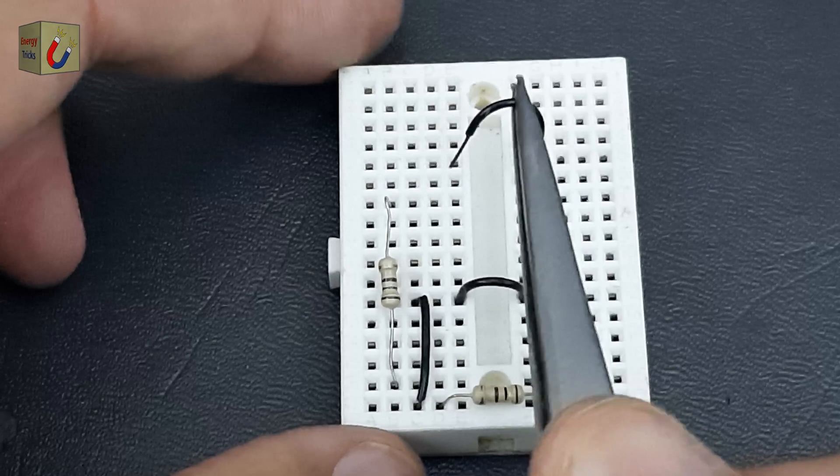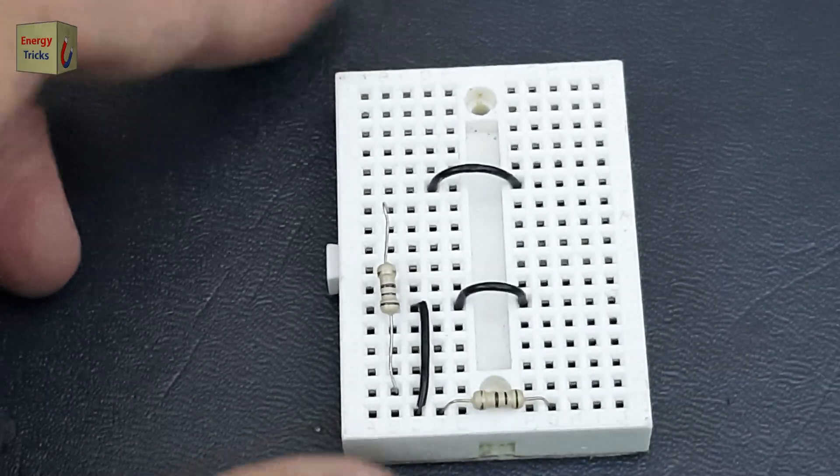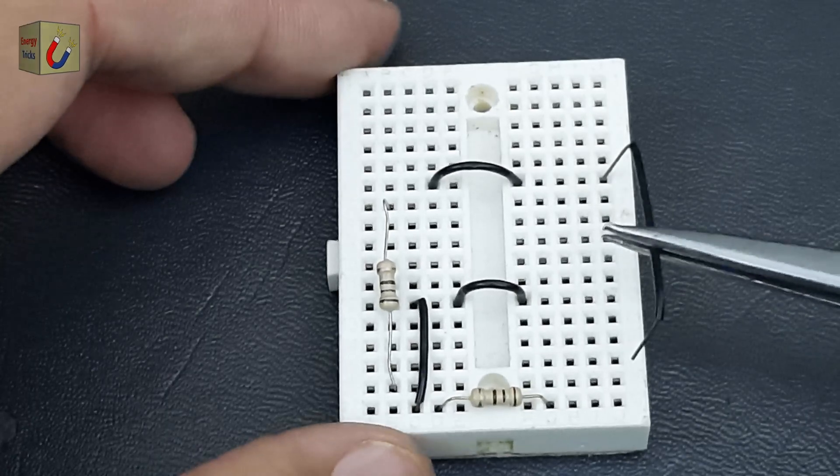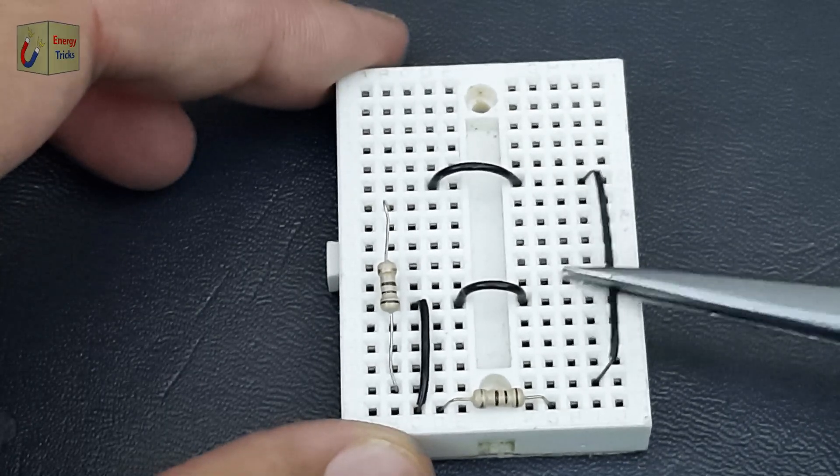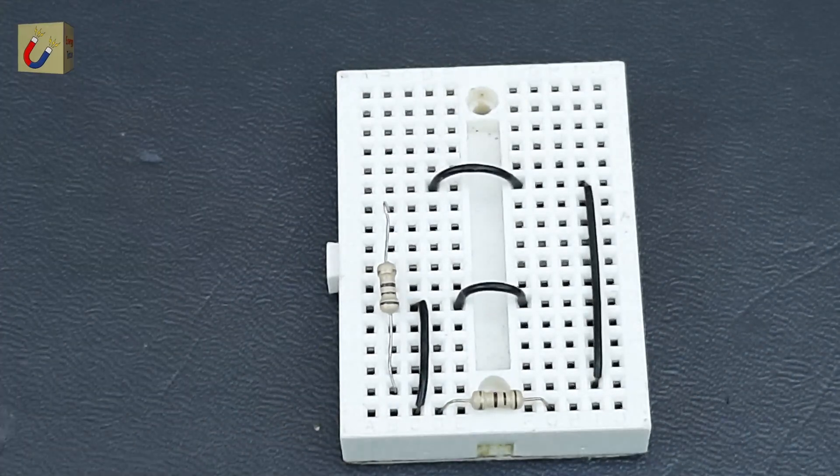Next, insert two jumper wires into the breadboard to create a connection pathway for the positive terminal of a 3.7-volt battery. This setup will allow the power from the battery to flow seamlessly through the circuit, enabling proper functionality.